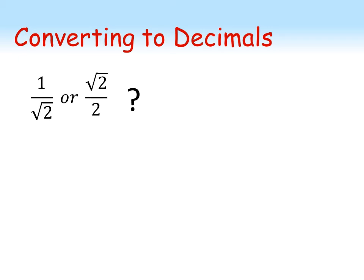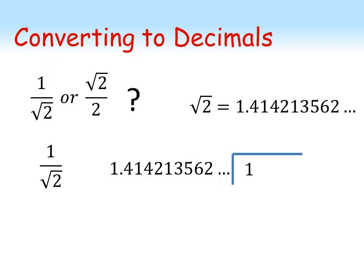But before calculators were invented, everything had to be done by hand. Using an algorithm to work out square roots, a person could work out that the square root of 2 is 1.414213562 and so on. Now if we were using the fraction 1 over root 2 to change this into a decimal, we would need to do 1 divided by 1.414 and so on. Writing it out like this, we've got to divide 1.414 into 1—not so easy.